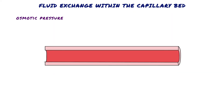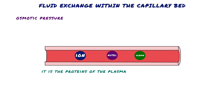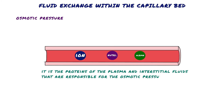The second force, osmotic pressure, is exerted by osmotically active particles within the blood — this can be ions and nutrients. An important contributor to osmotic force in the blood is the protein albumin, because proteins are the only dissolved constituents in the plasma and interstitial fluids that do not readily pass through the capillary pores. It is the proteins of the plasma and interstitial fluids that are responsible for the osmotic pressures on the two sides of the capillary membrane.